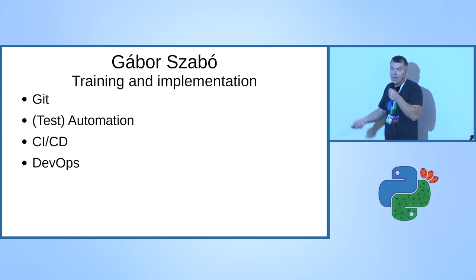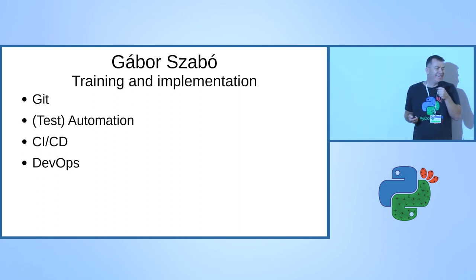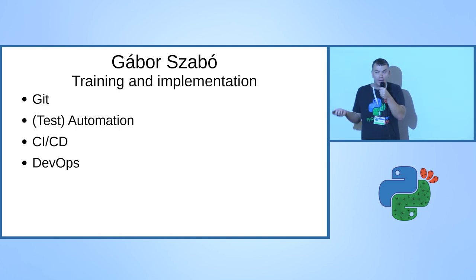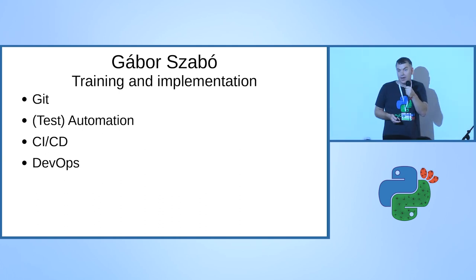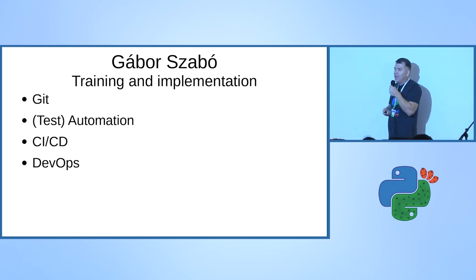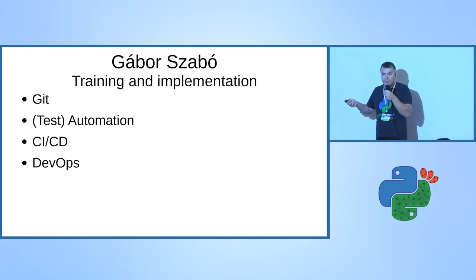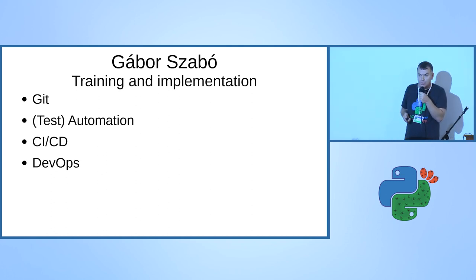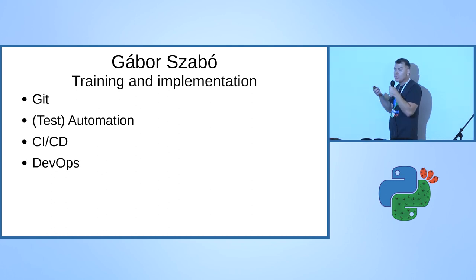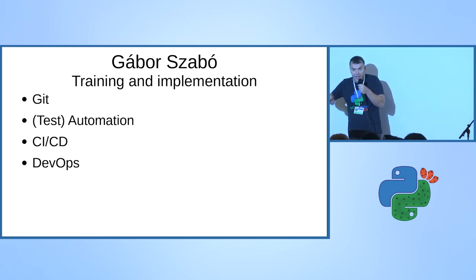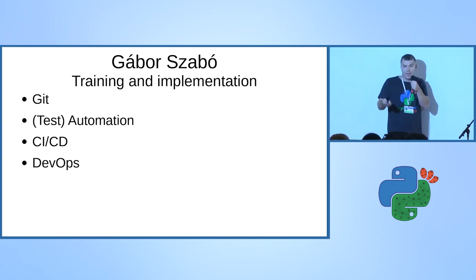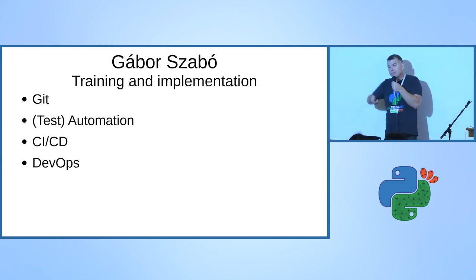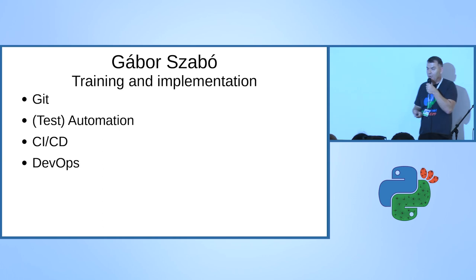My name is Gabor Sabó. I'm self-employed; I go to companies and try to help them improve their software development cycle - starting from version control in some cases, all the way to test automation, CI/CD systems, and sometimes what's called DevOps.